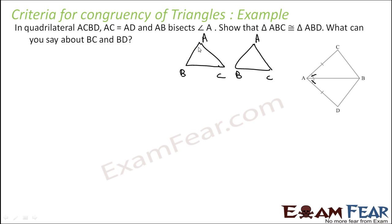Angle BAC and angle BAD are given equal since AB bisects angle A. Sides AD and AC are given equal. And AB is the common side, so AB equals AB. Looking at the figure, you can see it is side-angle-side — SAS. By SAS these two triangles are congruent. Drawing the figure is key; once you draw it you can identify the congruence easily with practice.